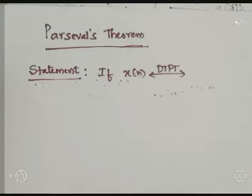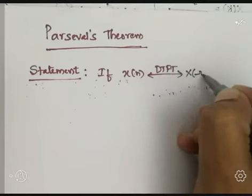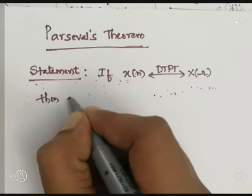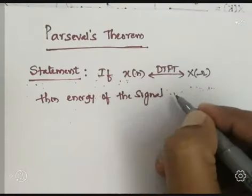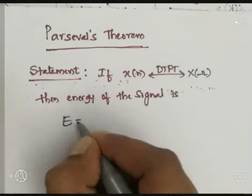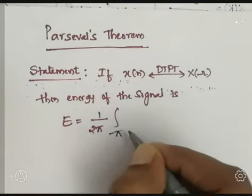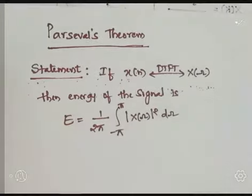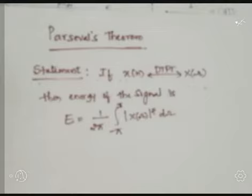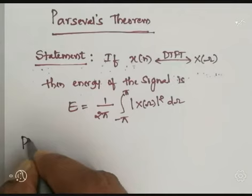Parseval's theorem of DTFT: the statement of this theorem is that if the sequence X of n has DTFT X of Omega, then the energy of this signal is given by 1 divided by 2 pi, integration over the limits minus pi to plus pi, mod of X of Omega squared, d Omega. Parseval's theorem is meant for finding the energy of a given sequence in the frequency domain. This is the statement of Parseval's theorem — let's go for the proof.